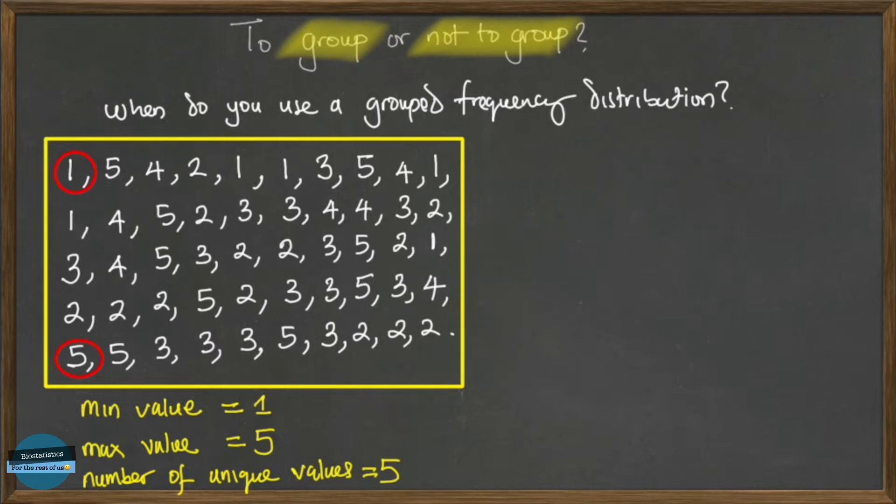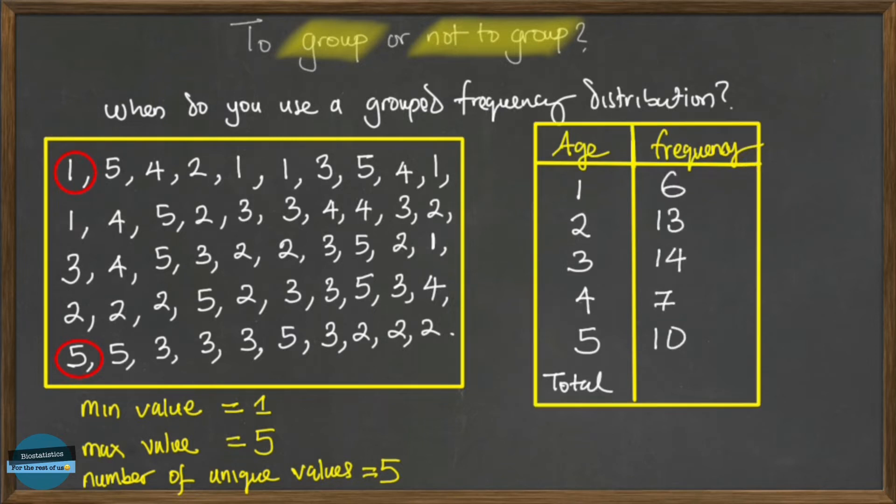This data can easily be represented into a simple frequency table where we put all the unique values. After putting the unique values, just bringing out the frequency will give us something as simple as this. This is quite simple, right?